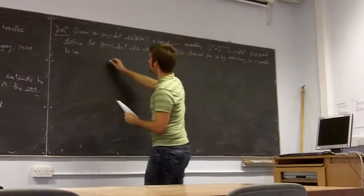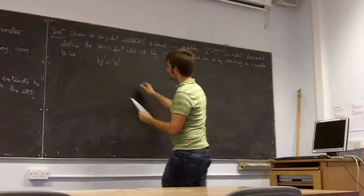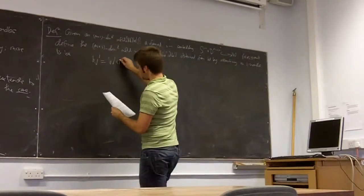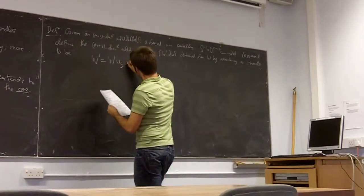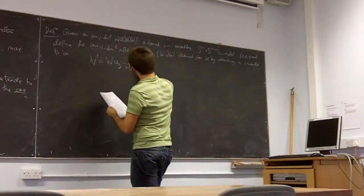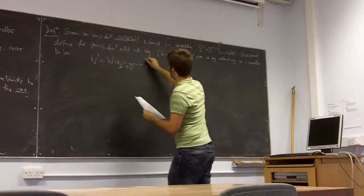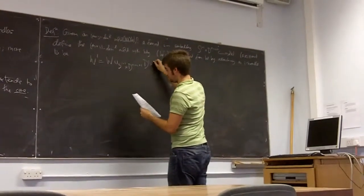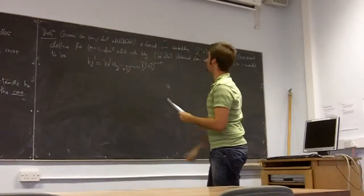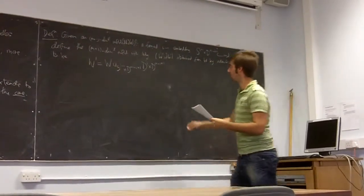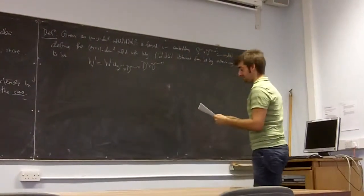To attach an i-handle, we attach a D^i cross D^(m+1−i) via this framed embedding. And that's called attaching an i-handle.